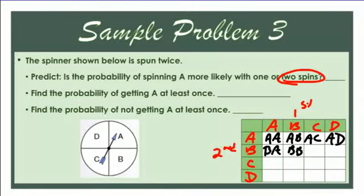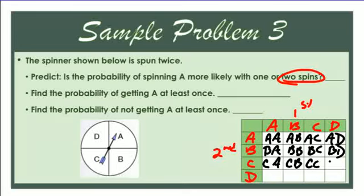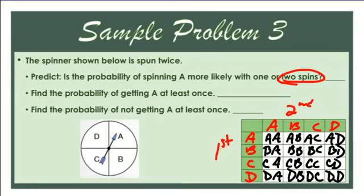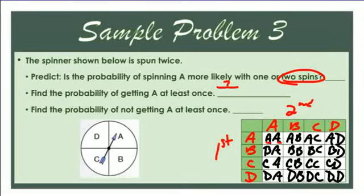Continuing the chart — you can also get B-A, B-B, B-C, B-D; C-A, C-B, C-C, C-D; and D-A, D-B, D-C, D-D. That gives 16 total outcomes. Counting the combinations with at least one A: one, two, three, four, five, six, seven. So the probability of getting at least one A is seven out of sixteen. Seven divided by sixteen is 0.43, compared to one-fourth (0.25) for a single spin — so you have a better chance with two spins.